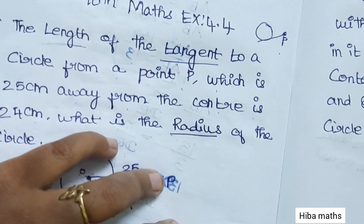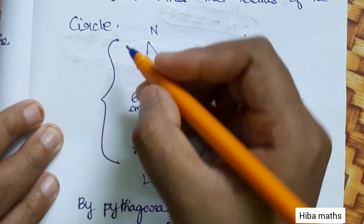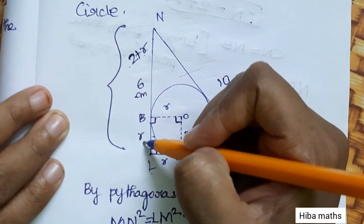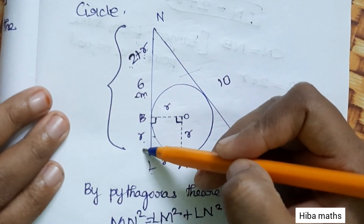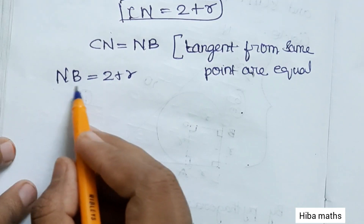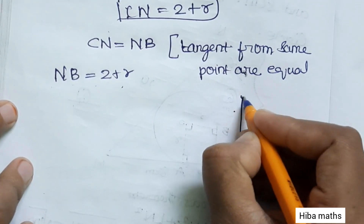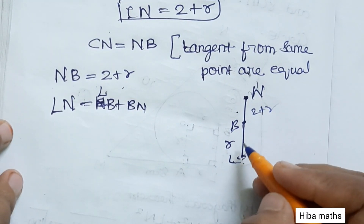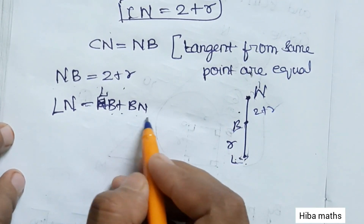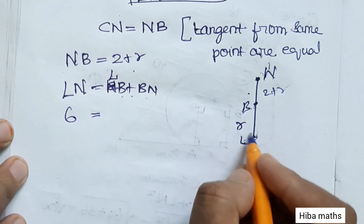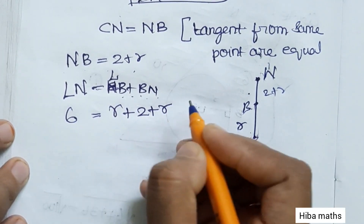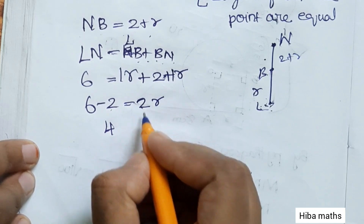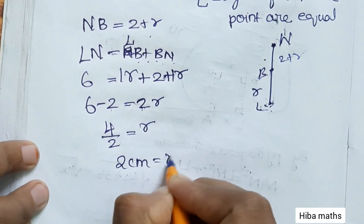The full side LN equals 6. We have NB plus LB equal to LN, so (2 plus R) plus R equals 6. This gives 2 plus 2R equals 6, so 2R equals 4, and R equals 2. The radius of the inscribed circle is 2cm. Thank you so much for watching.